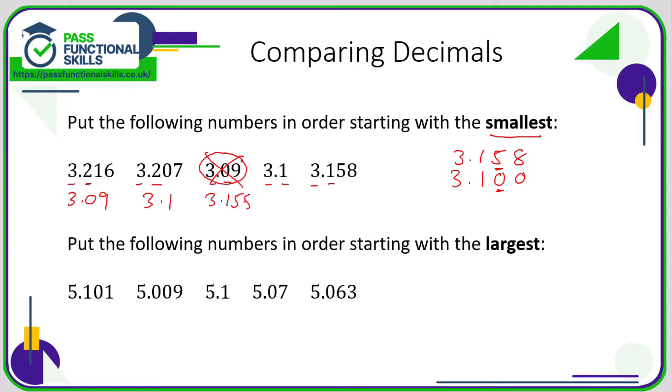So now we're looking at the numbers that begin three point two. After the two we've got a one and a zero. Zero is less than one, so that's going to be three point two zero seven and three point two one six, which is the largest. Another example: we're starting with the largest.